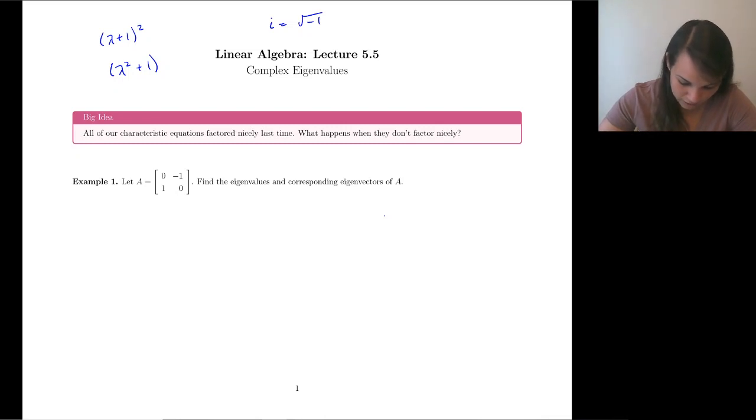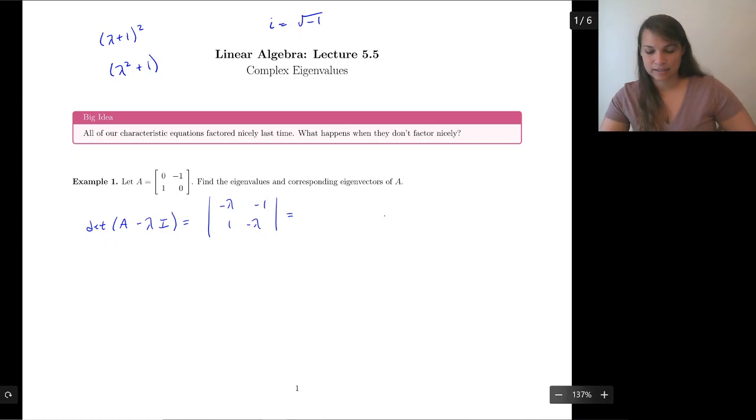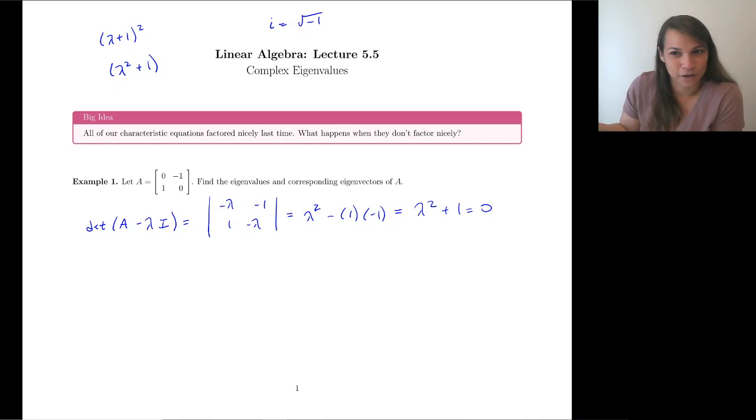I feel pretty confident that you guys remember this, i is equal to the square root of negative one. However, I can't really make many assumptions about what you know about negative numbers because it's not actually in the curriculum for anything preceding this class. A little awkward, but that's fine. But that's the big idea, is what are we going to do when we encounter something like that? So let's jump in. Let's just try an example.